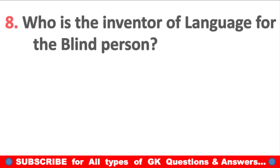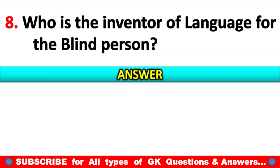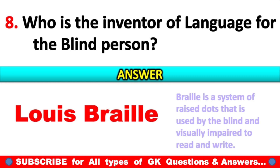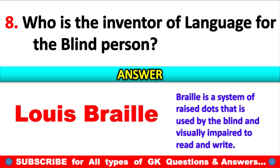Who is the inventor of the language for blind persons? Answer: Louis Braille. Braille is a device or system of raised dots that is used by the blind and visually impaired to read and write.